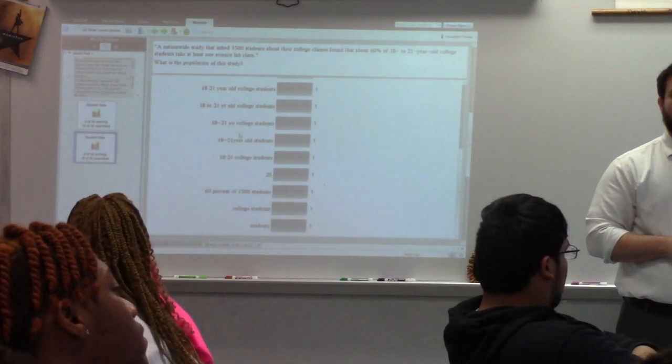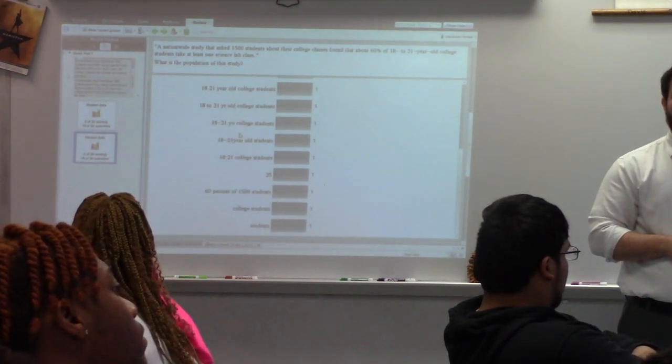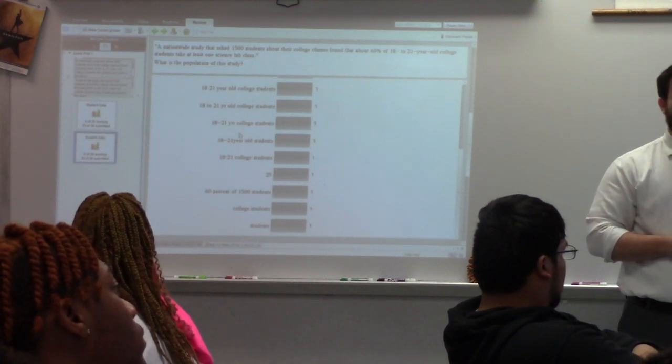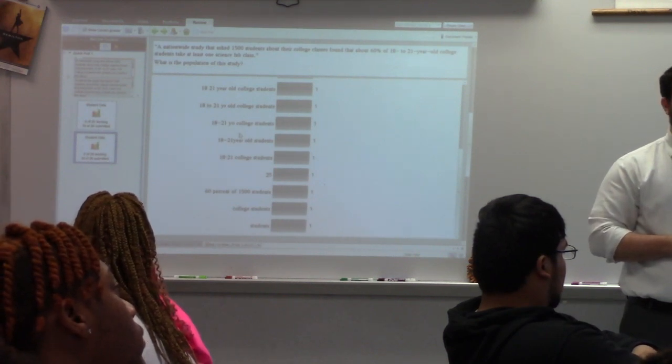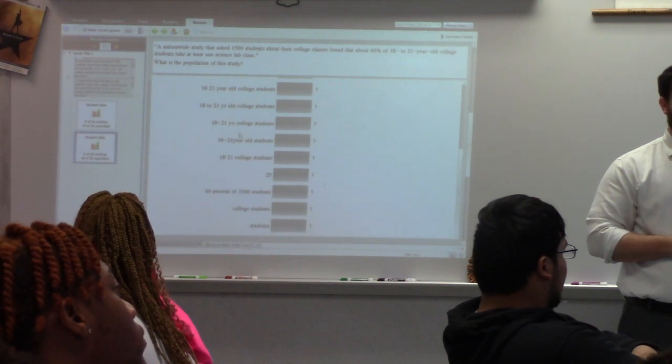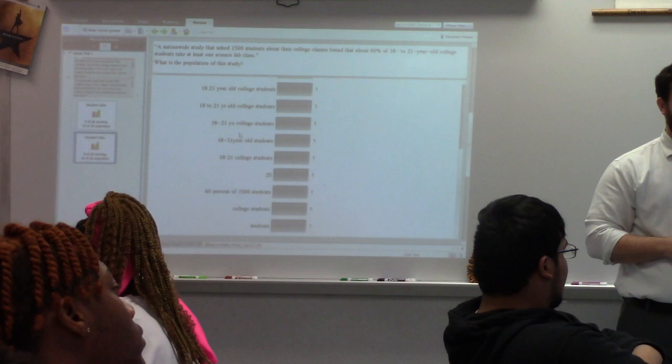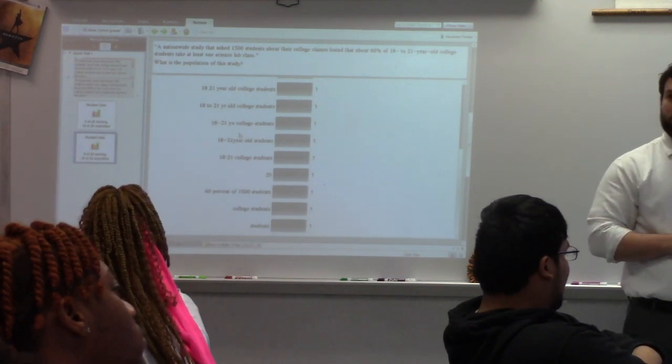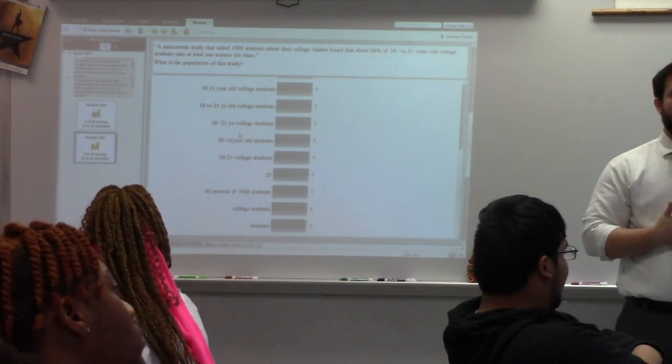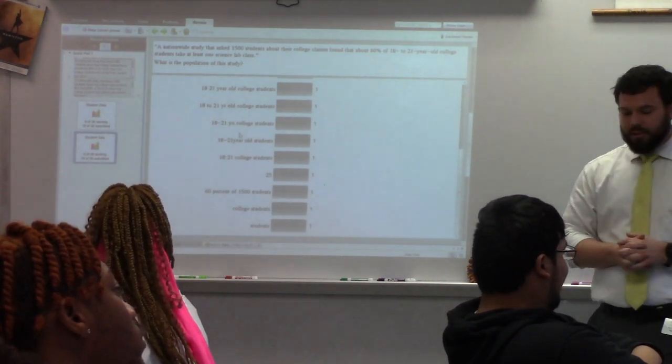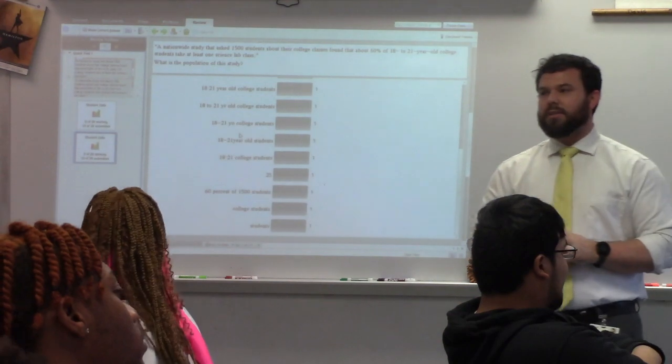Population is all. Well, 18 to 21 is just a certain group. Okay. There might be some more details to it that we need to consider. That's a claim. Why do you believe that? But why do you think that's the sample, not the population? Quite a few of us thought that was the population. So I need to emphasize this.